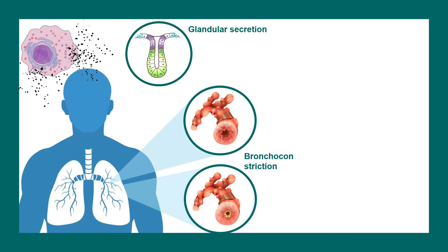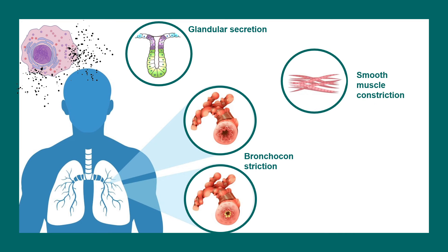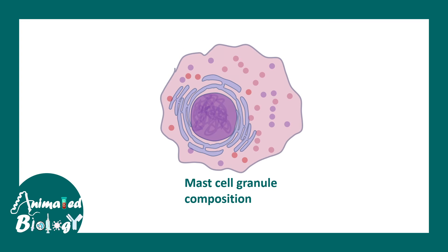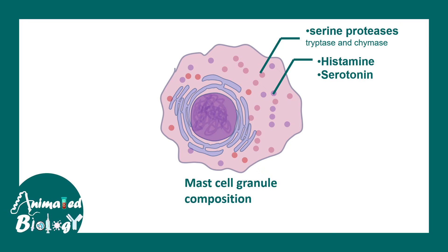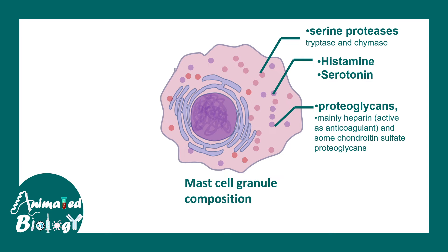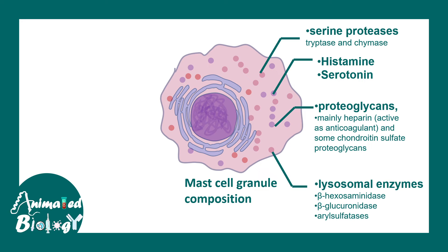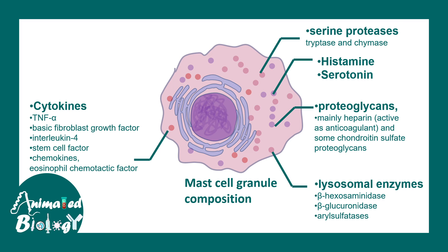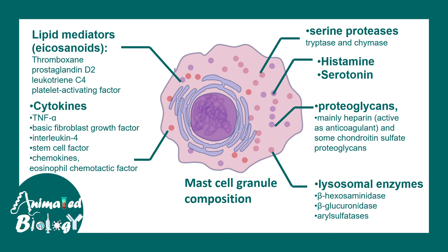Mast cell degranulation leads to bronchoconstriction, glandular secretion, smooth muscle constriction, and vasodilation. Mast cell granule composition is diverse, including serine protease-containing granules with tryptase and chymase, histamine or serotonin-containing granules, and granules containing proteoglycans like heparin, which is a potent anticoagulant. There are also lysosomal enzyme-containing granules. Cytokines secreted include TNF-alpha, interleukins, stem cell factors, chemokines, and eosinophil chemotactic factors. Additionally, lipid mediators are secreted, which are potent activators of inflammation.